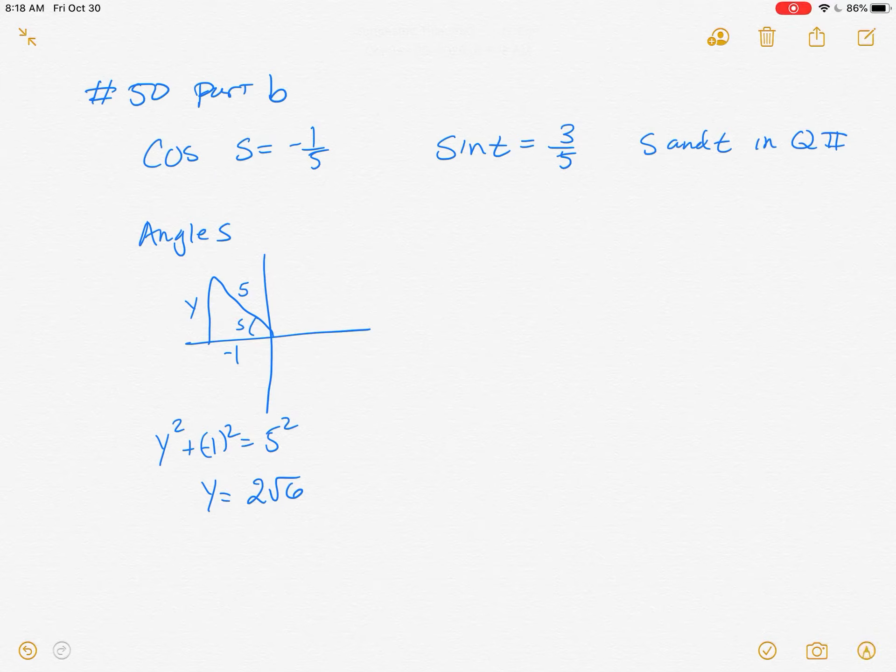we quickly get that Y equals 2 root 6. So 2 root 6 is a replacement now in here for Y. Now that we know that's 2 root 6, we can get any trig angle.